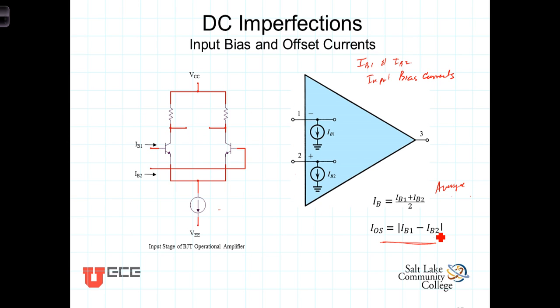On field effect transistors, the input currents are nearly zero at the input gates. The input gates on FETs don't draw nearly the amount of current that the input bases do on bipolar junction transistors.